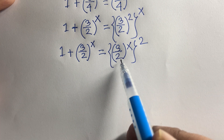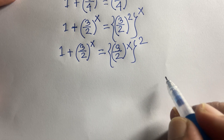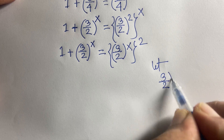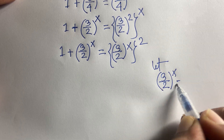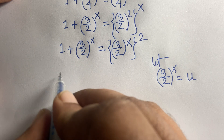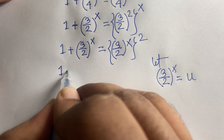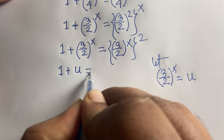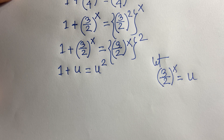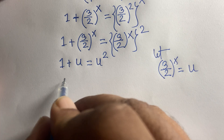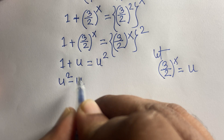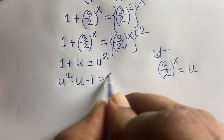At this moment, let u equal (3/2)^x. Then the equation becomes 1 plus u is equal to u squared. This is a quadratic equation, which we rewrite as u squared minus u minus 1 equals 0.